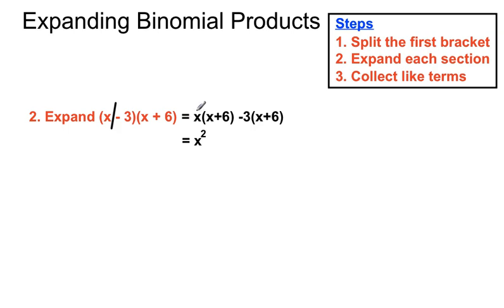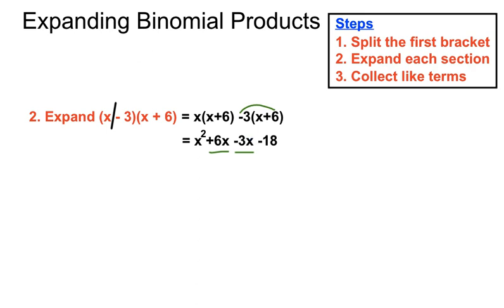We get x squared when we multiply x by x, then 6x when we multiply x and 6. Now be a little careful — any time you have a minus in front of a bracket, be careful with the signs. Minus 3 times x is just minus 3x. But minus 3 times a plus 6: a minus times a plus makes a minus answer — a lot of students get that wrong, so slow yourself down. We have a plus 6x and a minus 3x as like terms, so joining those gives x squared plus 3x minus 18. Careful with the signs on that second bracket.